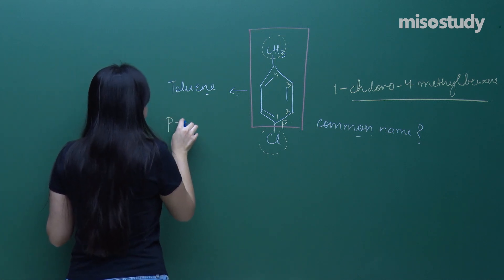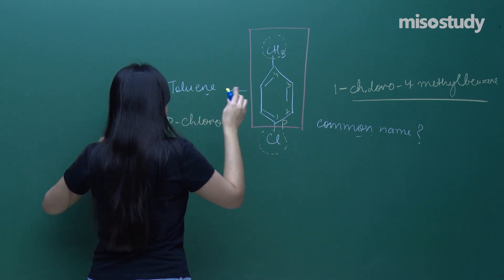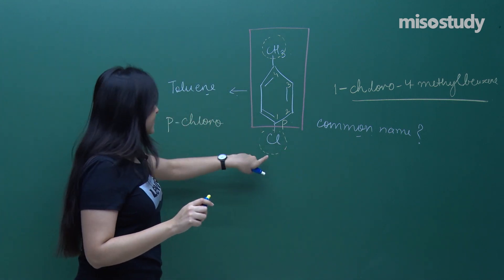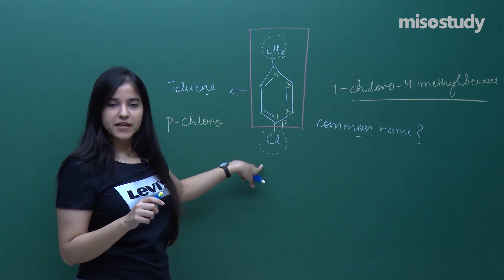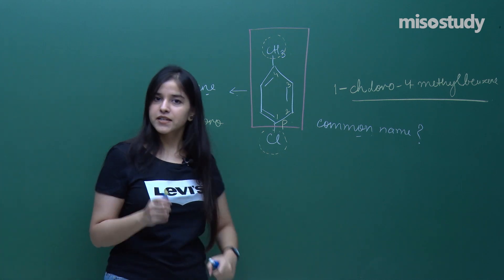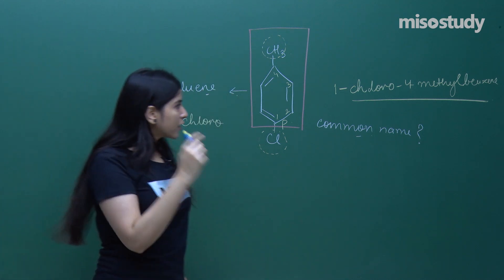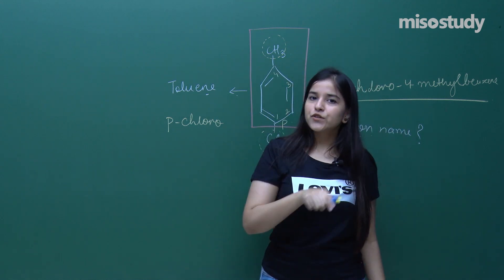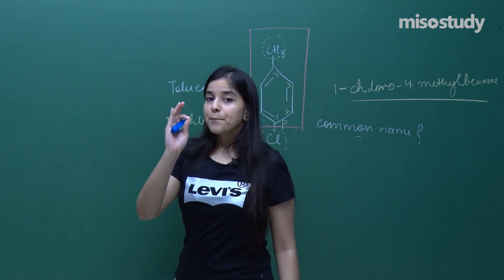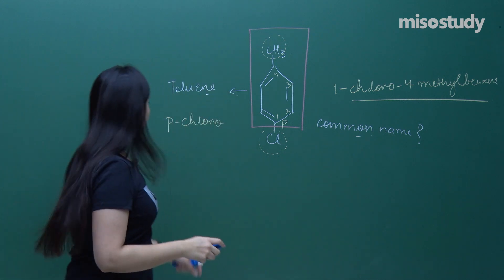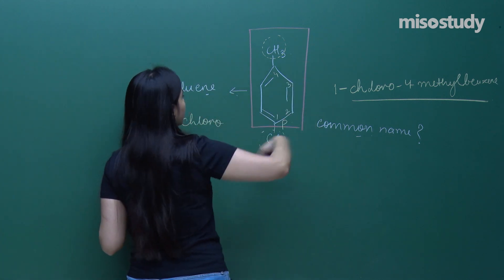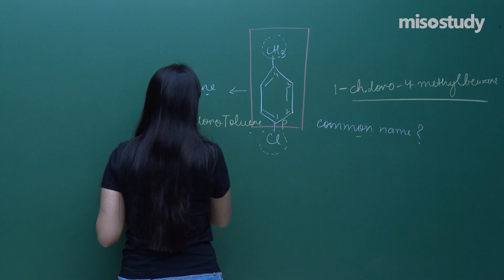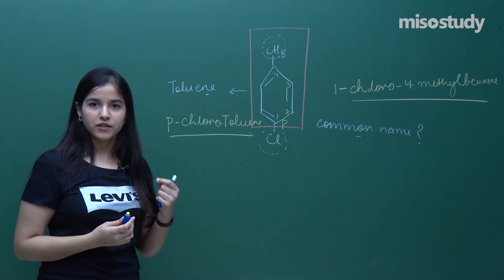This is nothing but toluene. And as soon as I get an attachment in the toluene, which position is this? This is nothing but the para position. So it will be para-chloro — I am considering this chlorine as the substituent, and I will be telling the position of that substituent. We do not represent positions as numbers in common names, but use ortho, meta, and para. So it will be para-chloro toluene.